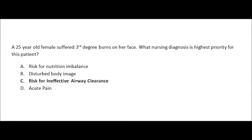Our options are: A: risk for nutrition imbalance. B: disturbed body image. C: risk for ineffective airway clearance. Or D: acute pain. All are valid nursing diagnoses for this patient, but which is most important? Using Maslow's hierarchy — physiological needs before psychological needs — we can immediately eliminate option B because disturbed body image is a psychological need. For A, C, and D, we use our ABCs. Pain is not part of ABCs and is not the priority right now. Nutrition is important but not the priority. C is very important because any time you have burns on the face or torso, the airway is at risk. The answer is C: risk for ineffective airway clearance. Using Maslow's hierarchy, the nursing process, and ABCs really helps eliminate options and pick the correct choice.